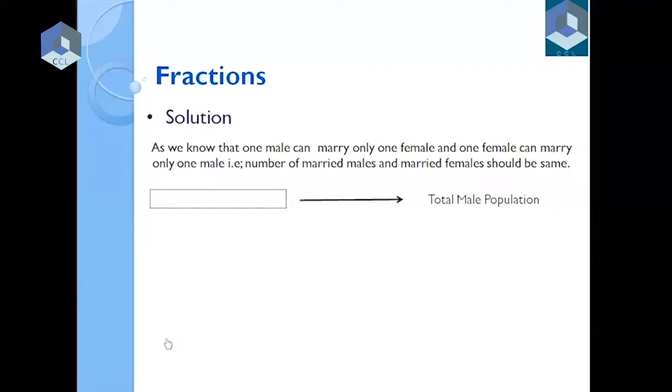First of all, I have taken a bar representing the total male population. Two-thirds will be married, so I have divided it equally into three parts and shown two parts as married. That blue colored part is the married part.